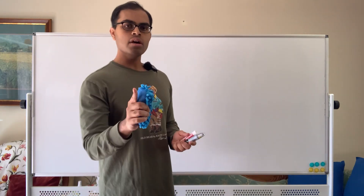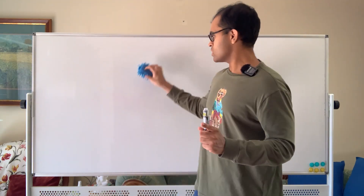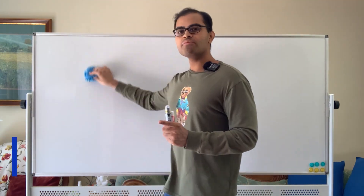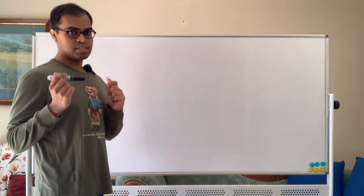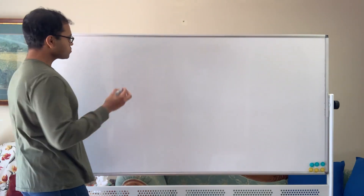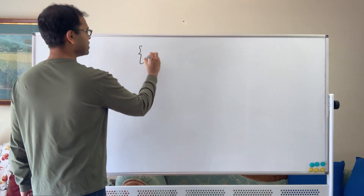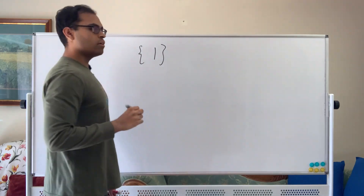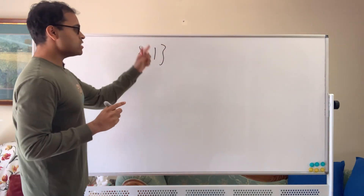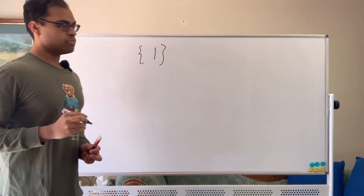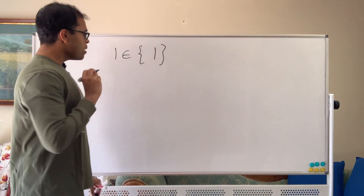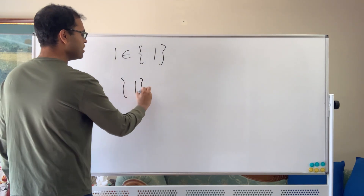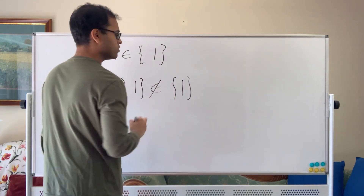I want to end with an important comment that confuses a lot of people: what does it even mean for a set to be in itself? Here's an example. Suppose I have the set {1}. The number 1 is of course a member of this set, but the set {1} itself is not a member of itself — the set is not listed inside itself.